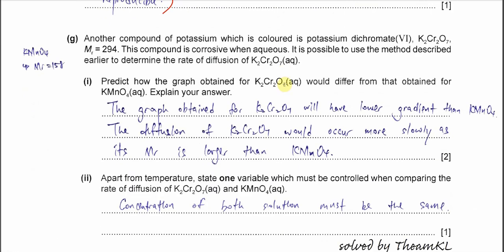Part G: another compound of potassium which is colored is potassium dichromate, K2Cr2O7, this orange color, and its molar mass is 294. Recall the KMnO4 in the question, molar mass is 158. So the potassium dichromate molar mass is actually larger. When a compound with a larger molar mass, the size is larger, and therefore when it moves, it moves slower. That's the key.